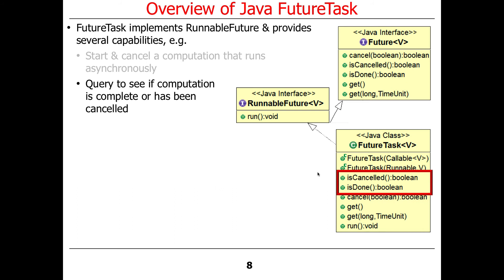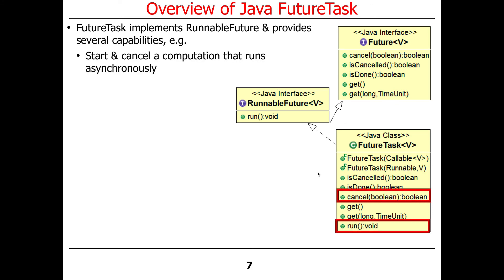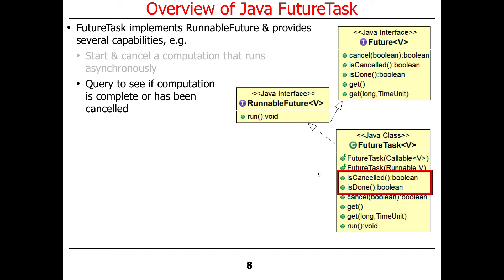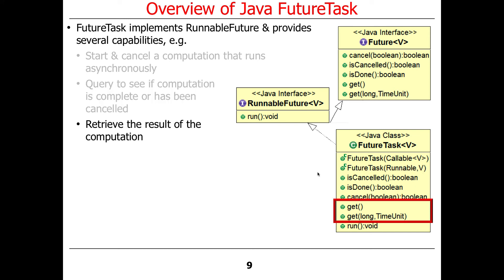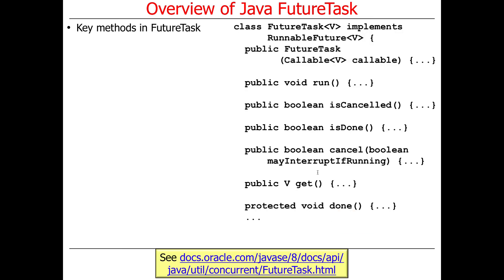Because FutureTask is a future, you can also check to see if it's completed or been canceled. Here are the key methods: you can run it — once placed into a thread pool it gets run as a runnable — and you can cancel it because it's a future. You can check if it's been canceled or completed, and get the results of the computation. It's one of those abstractions that doesn't really make sense until you see an example.